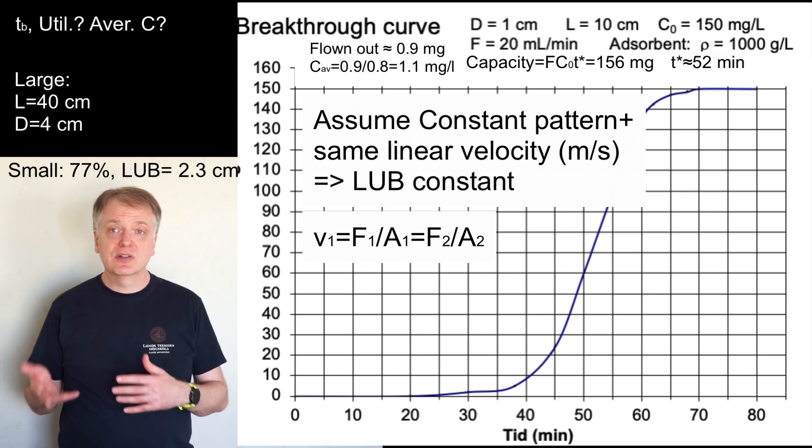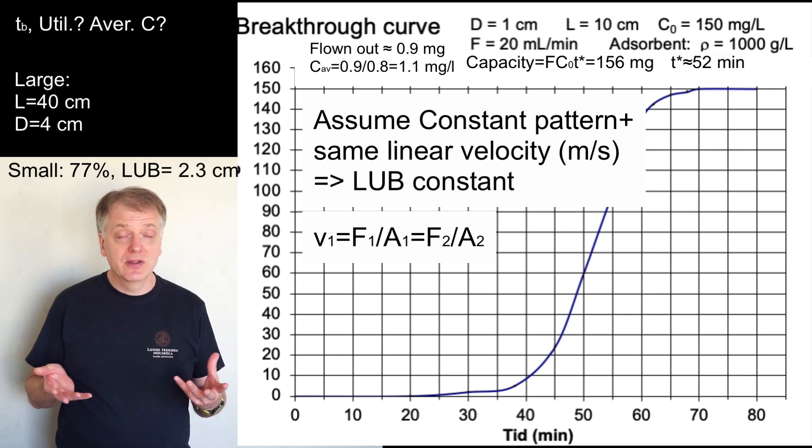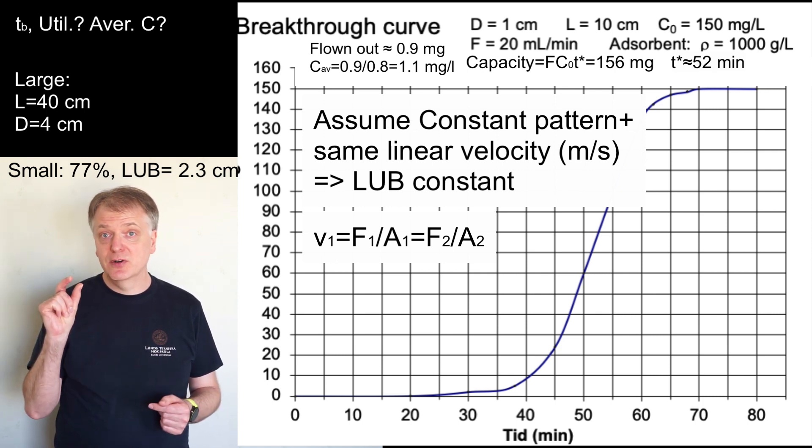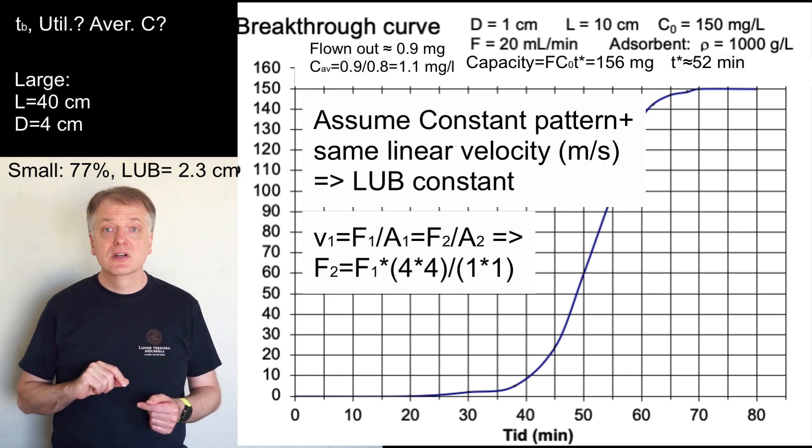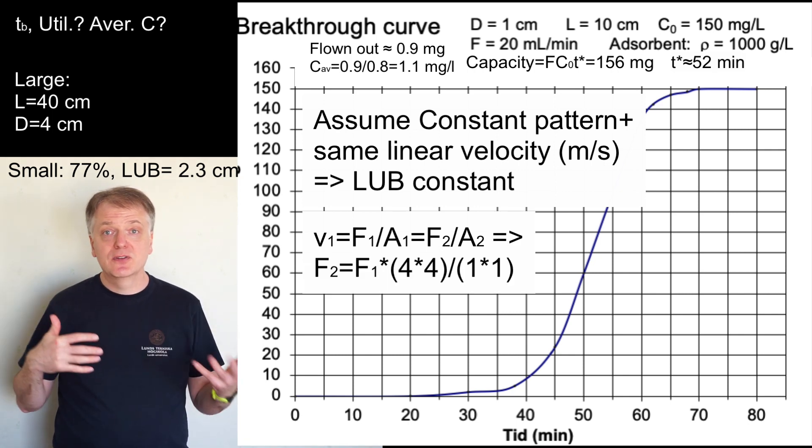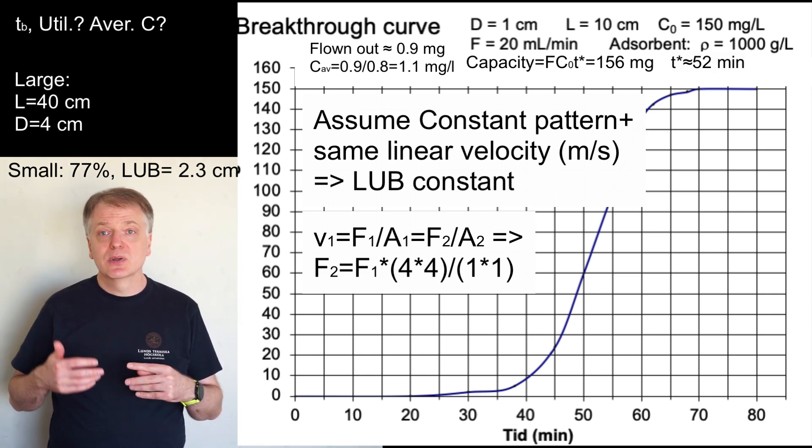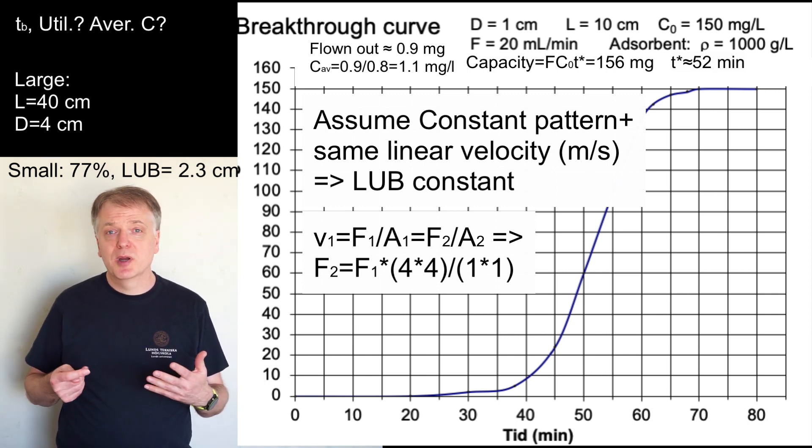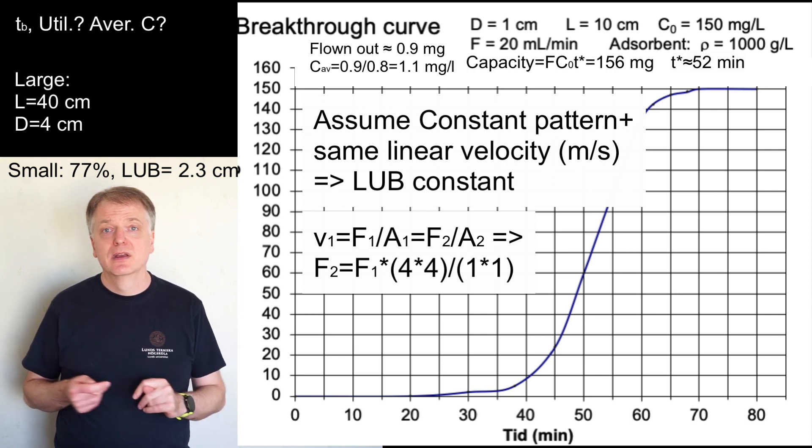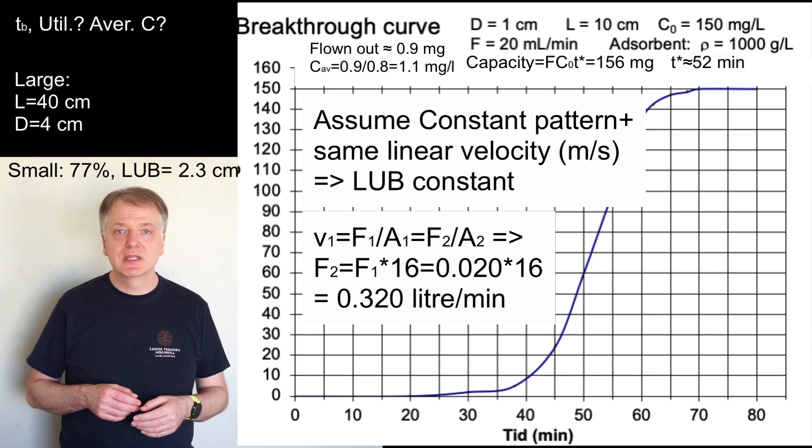So v equals f1 divided by a1 but that should also be f2 divided by a2. And with a circular cross section and a diameter of 1 centimeter in the first and 4 in the other respectively we get f2 equals f1 times a2 divided by a1. So 20 times 10 to the power minus 3 times the square of 4 divided by 1 or 320 milliliters per minute.